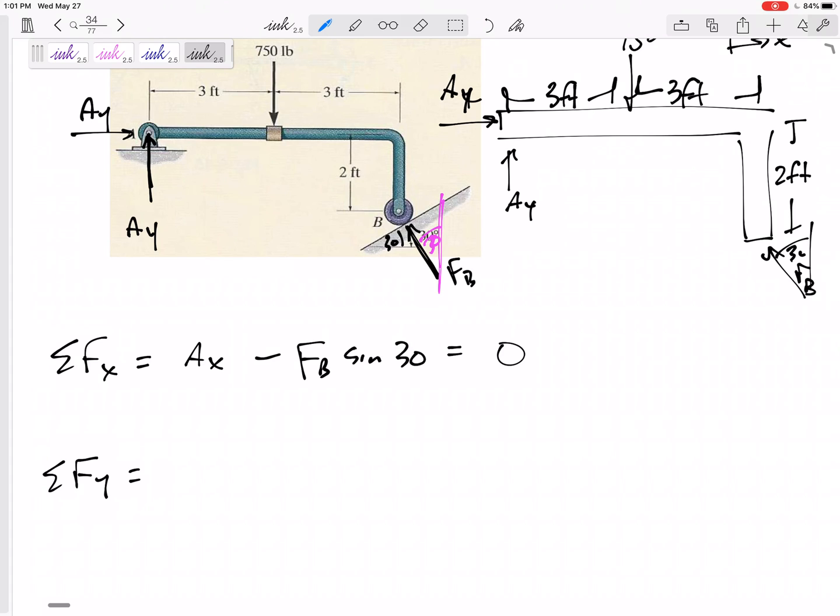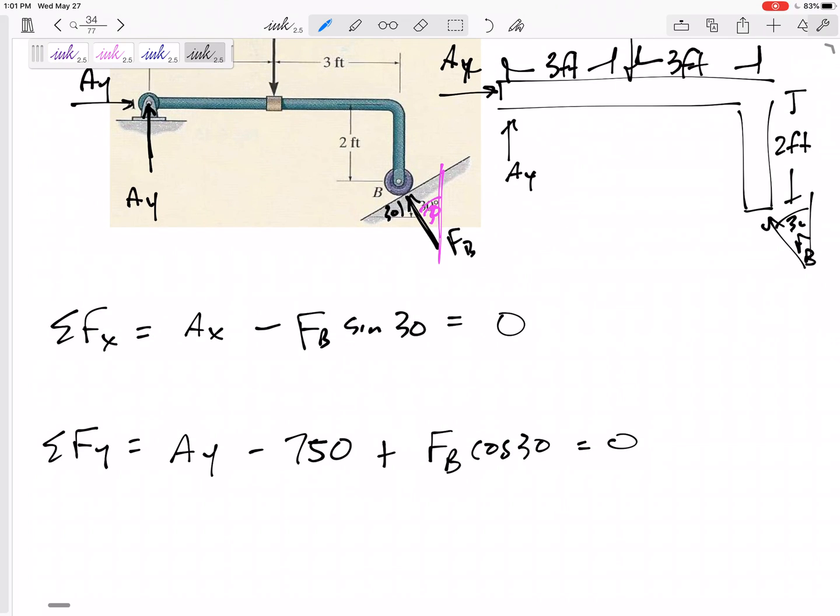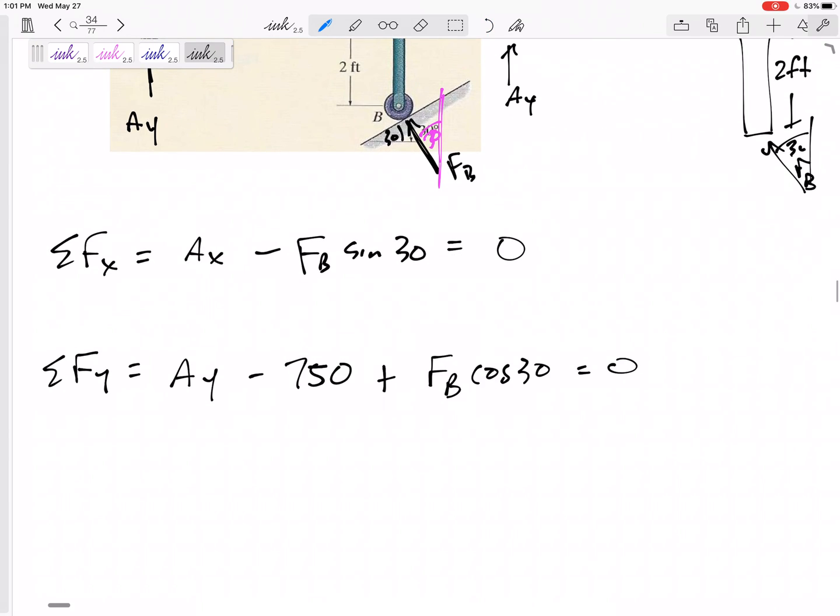So let me jump to my next equation. In the y direction, I've got Ay minus 750 plus Fb cosine 30 equals zero. Again, that has two unknowns. Then I think, well maybe do these two equations have two unknowns? Those two equations have three unknowns. Let me keep on moving.